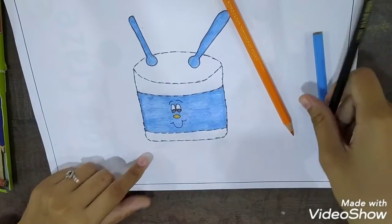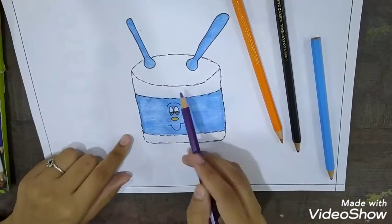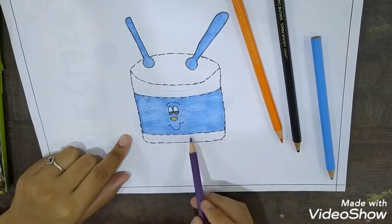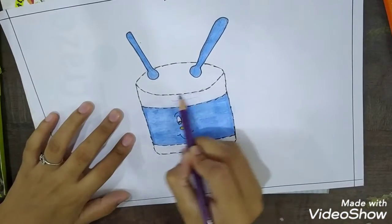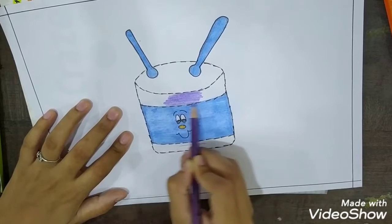This way. Okay. Now I am going to take purple color and color this one and this one. Okay. This way. I am coloring it in sleeping way.